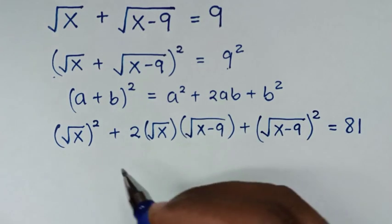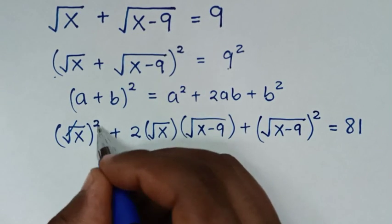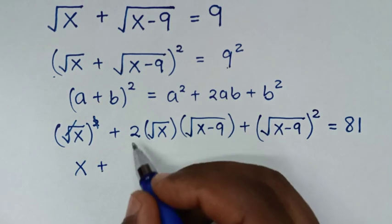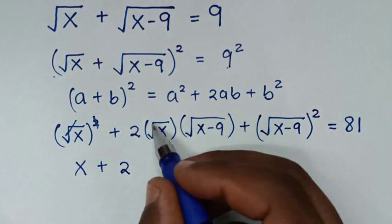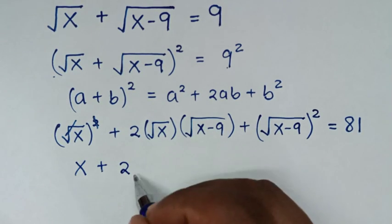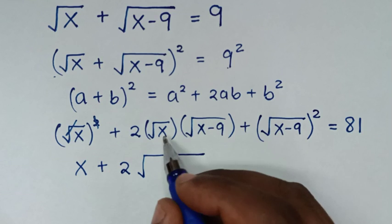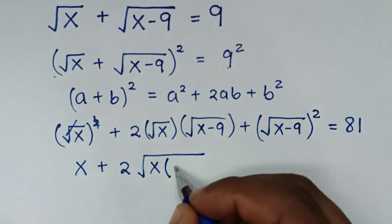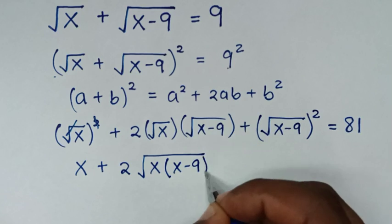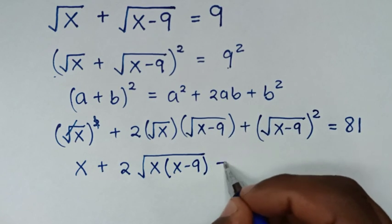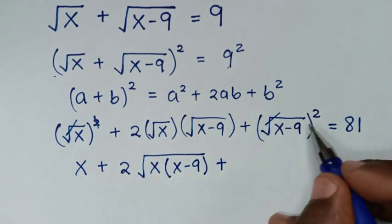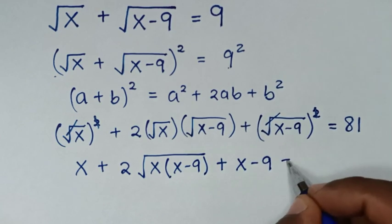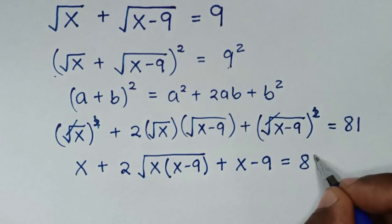In the next step, to simplify: the square root cancels with the square, so (√x)² becomes x. Then plus 2 — we'll take the common square root, so it will be 2√x times (x−9). Then (√(x−9))² simplifies to plus (x−9), and this equals 81.